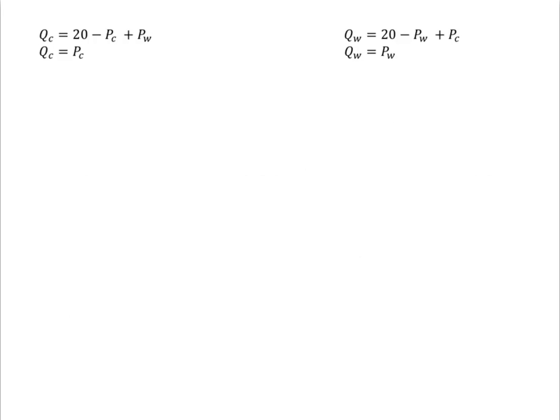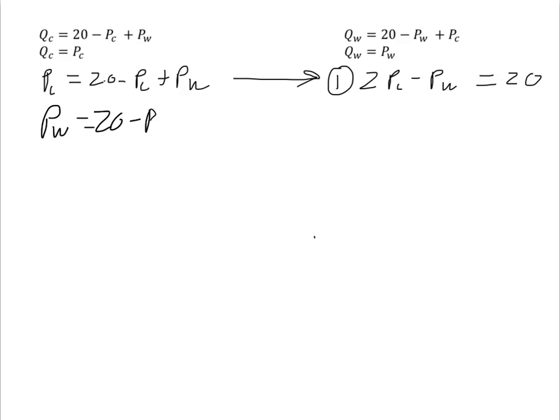Setting supply equal to demand for corn, we get PC is equal to 20 minus PC plus PW. That gives me my equation 1, which would be 2PC minus PW equals 20. Doing the same for wheat yields PW equals 20 minus PW plus PC.